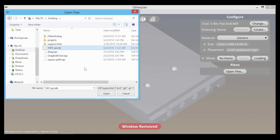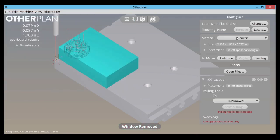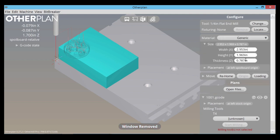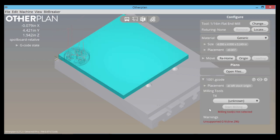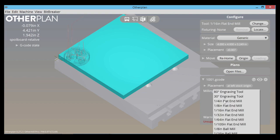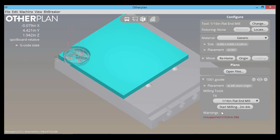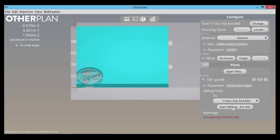There we go. So the next thing we need to do is set up our material. For size, expand that. And for Z, type in 0.249. And then for width and height, we can say 4x4. We just have to tell OtherPlan that we want to use the 1/16th inch flat end mill for this part. And you can see on the screen that the 3D preview updates. And now we're ready to mill. Hit it.